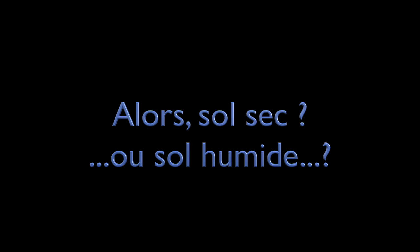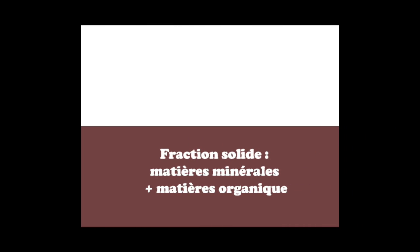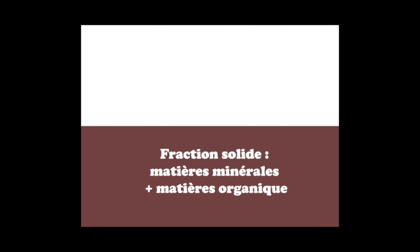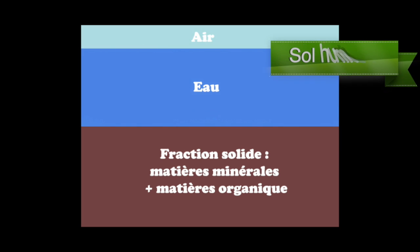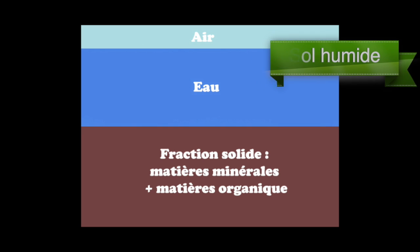En fait lorsque vous tenez une poignée de terre entre les mains, la fraction solide est toujours invariable. Les variations, elles vont se faire au niveau des lacunes entre les agrégats de votre sol. En sol sec par exemple, vous aurez peu d'eau et beaucoup d'air. Mais vous aurez la même quantité de particules solides, avec beaucoup plus d'eau et beaucoup moins d'air, dans un sol humide, tout simplement.